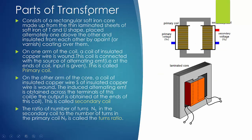Let's see what the parts of a transformer are. Basically it has three parts. One is the primary coil winding, second is the secondary coil winding, and there is an inner soft iron core. The core consists of a rectangular soft iron core made up of thin laminated sheets of soft iron of T and U shape, placed alternately one above the other.